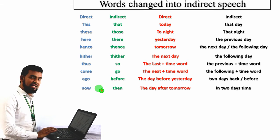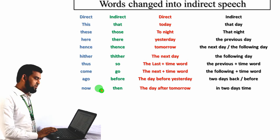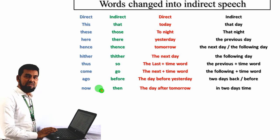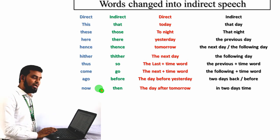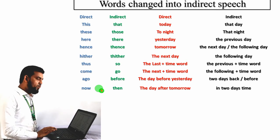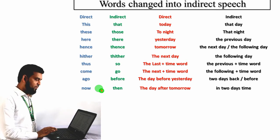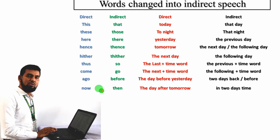If you find 'the next' plus a time word — for example, 'the next month' or 'the next year' — it will become 'the following month' or 'the following year'. If you find 'the day before yesterday', it will become 'two days back' or 'two days before'. 'The day after tomorrow' will become 'in two days' time'.